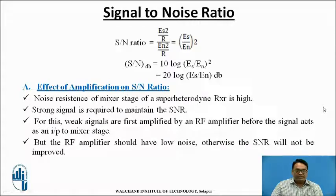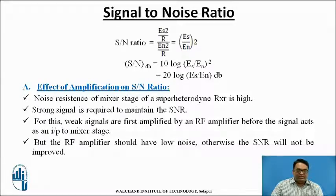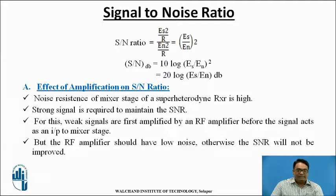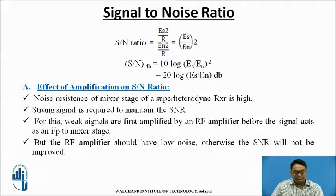Regarding the effect of amplification on signal to noise ratio: the noise resistance of a mixer stage in a superheterodyne receiver is very high. Hence a strong signal is required to maintain SNR for weak signals. First, signals are amplified by an RF amplifier before being given as input to the mixer stage. The RF amplifier must be a low noise amplifier; otherwise the signal to noise ratio will not be improved.